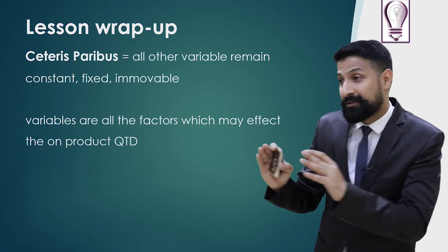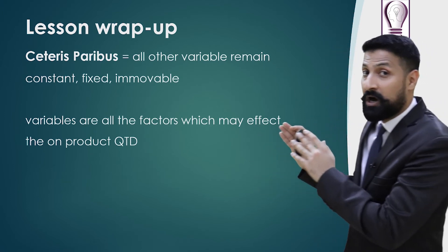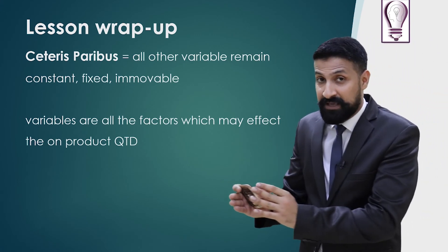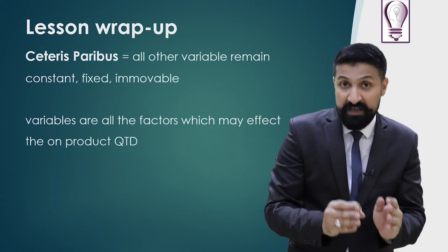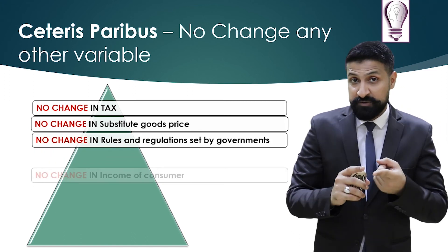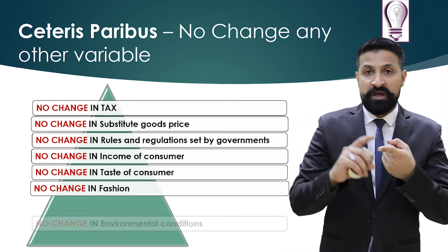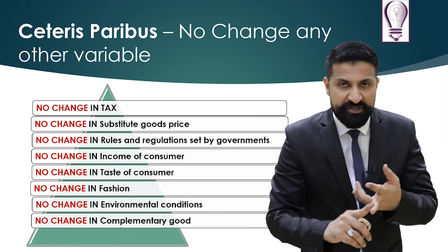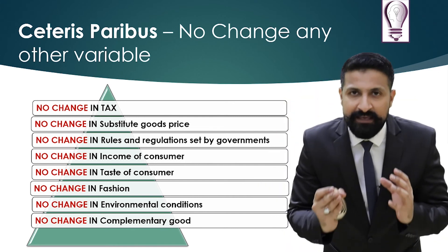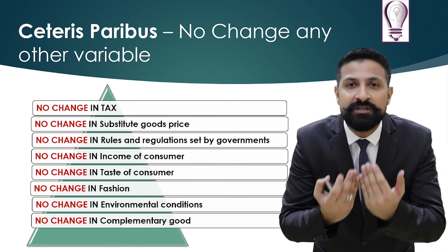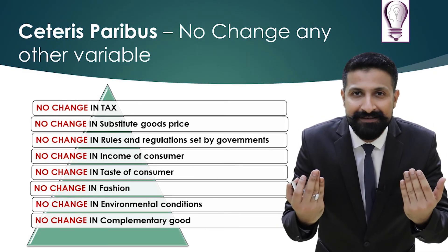We have studied what the variables are: variables are substitute goods and their prices, environmental factors, government rules and regulations, taste, fashion, or anything which may affect the consumer's decision of buying our product.